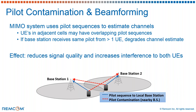Next, we looked at a special case called pilot contamination. Pilot contamination is an issue that beamforming can suffer because MIMO systems, particularly massive MIMO, use pilot sequences from each of the devices to estimate the channel between the base station and the device. The pilot signals sent from a device are sent to an intended base station, shown by a blue arrow, but those same pilot signals will also reach neighboring base stations. And in some cases, the device in a neighboring cell may be using the same pilot sequence. When this happens, it's called pilot contamination.